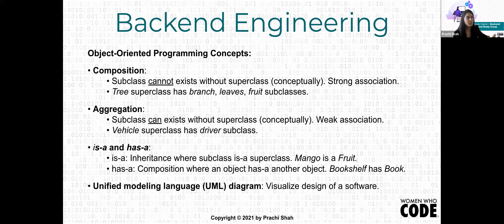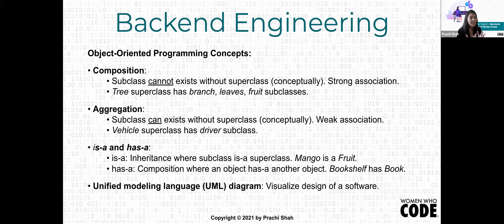IS-A signifies inheritance where a subclass is a type of superclass — for example, Mango IS-A Fruit. HAS-A is composition where an object has a relation with another object — for example, a bookshelf has a book, or a kitchen has a microwave. Unified Modeling Language (UML) is just a diagram representation to visualize the design of software, showing different classes, objects, and relationships between them.